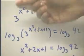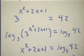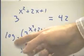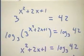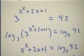Well, the variable we're looking for occurs only in this exponent, so we take the base 3 log of both sides, and we end up using the inverse property. Log base 3 and 3 to the power are inverse functions. We end up with x squared plus 2x plus 1 equals log to the base 3 of 42.